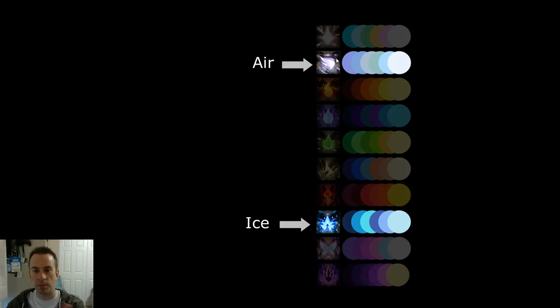You've got hue, saturation, and then finally value. Value got its own lesson. In this video, we're talking about saturation and hue — not as much value, although I will touch on that a little. Holy and mystic is another example of saturation: this version feels more serious and intense, more holy, and then by being more saturated, this one feels more playful and magical.